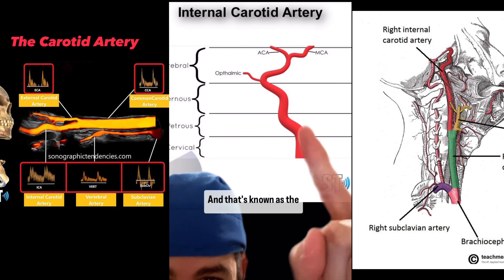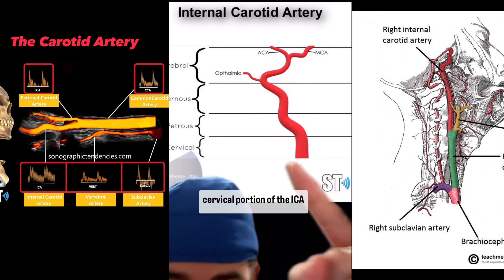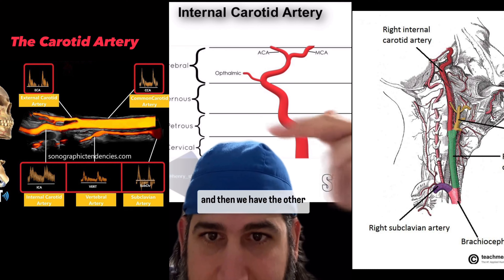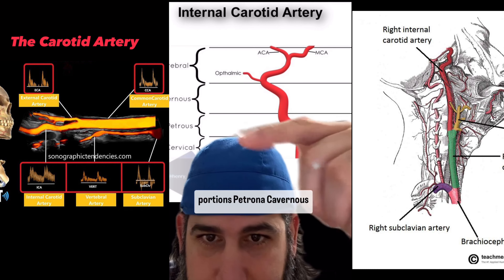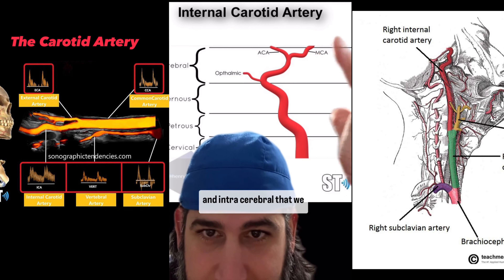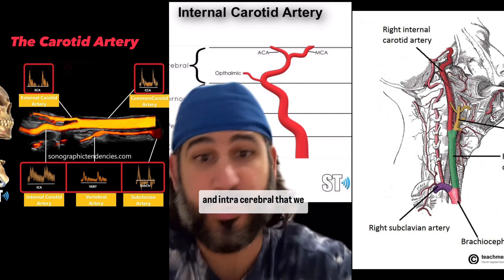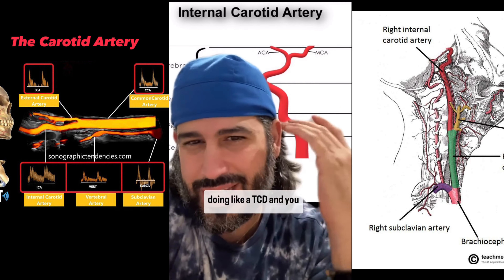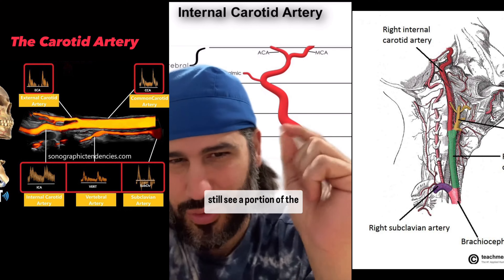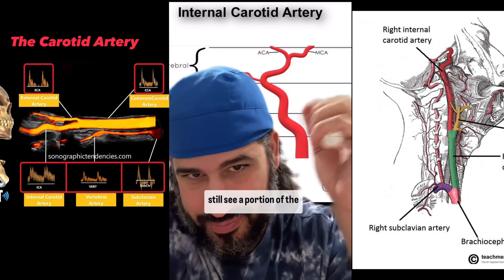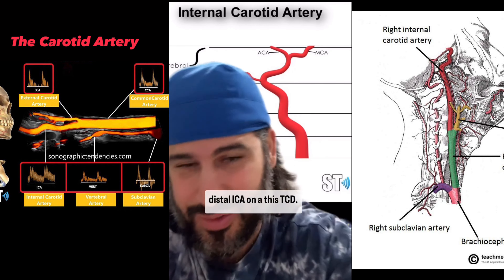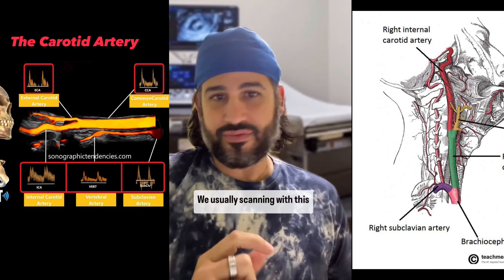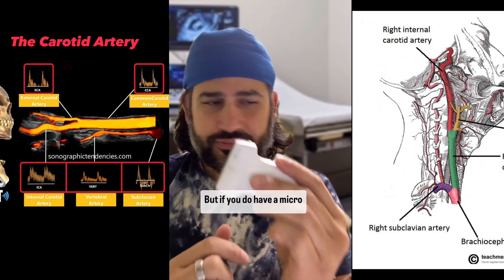That's known as the cervical portion of the ICA. Then we have the other portions — petrous, cavernous, and intracerebral — that we just can't see with ultrasound. So unless you're doing a TCD, and you still only see a portion of the distal ICA on a TCD, we're usually scanning with this probe.